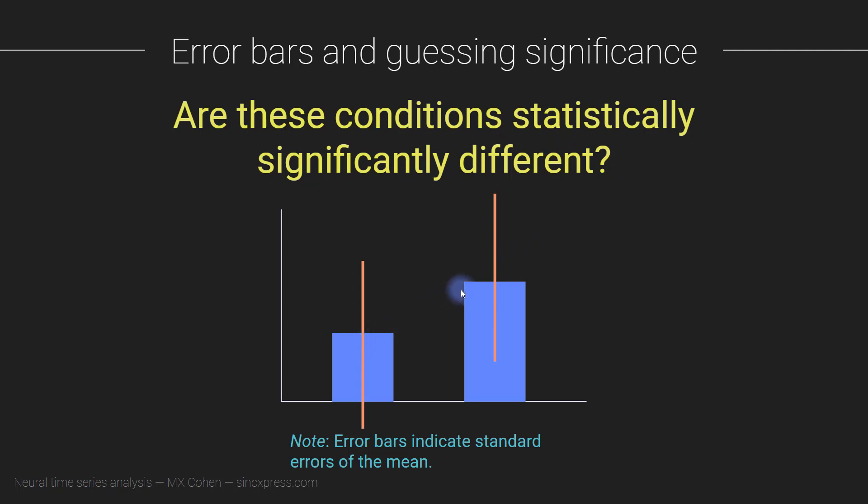Well, in this case, what we can infer is that this regression coefficient - whatever this is reflecting in the model - is statistically significant, significantly different from zero at the group level. So across the group of individuals, this beta coefficient is significantly different from zero.